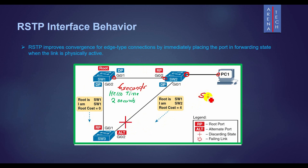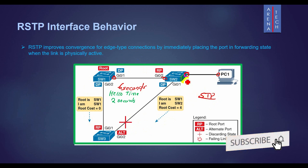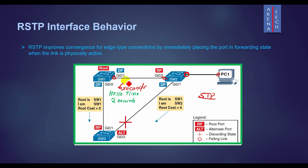RSTP passively waits on new BPDUs and reacts to them during the listening and learning states. With RSTP, the switches negotiate with neighboring switches by sending RSTP messages. These messages enable the switches to quickly determine whether an interface can be immediately transitioned to a forwarding state. In many cases, the process takes only a second or two for the entire RSTP domain.